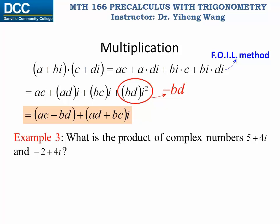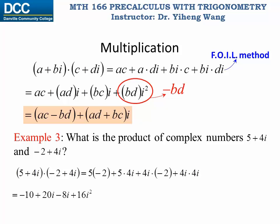For example, to find the product of five plus four i and negative two plus four i, we multiply using the FOIL method. After the calculation, the last term is sixteen times i squared. By definition i squared equals negative one, so sixteen i squared equals negative sixteen, which is a real number. Combining the real parts and imaginary parts together, we get negative twenty-six plus twelve i.